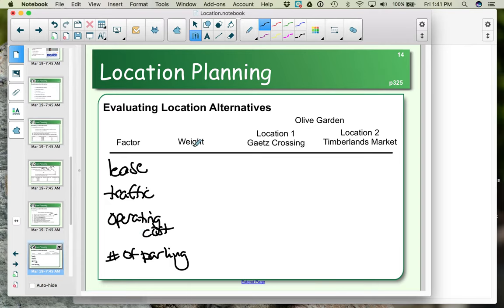Then you need to select weights. Those weights need to add up to a hundred percent. For example, if traffic is the most important, let's give it fifty percent or half the weight. If the number of parking spots is second most important, maybe we give it twenty percent. The cost of the lease we're going to weight at point two as well, and the operating cost, give it a point one. These must add up to one or a hundred percent.